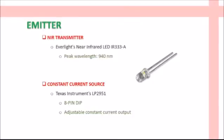Now we look at each block of the block diagram. The emitter circuit consists of a NIR transmitter — an Everlight near-infrared LED, IR333A, which has a peak wavelength of 940 nanometers. The other component of the emitter circuit is a constant current source to provide constant intensity light from the LED. It is provided with a constant current of 20 mA. A Texas Instruments LP2951 8-pin DIP IC is used to provide the constant current.